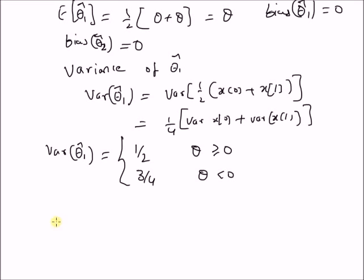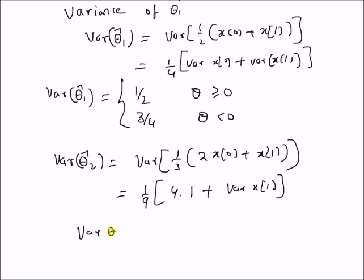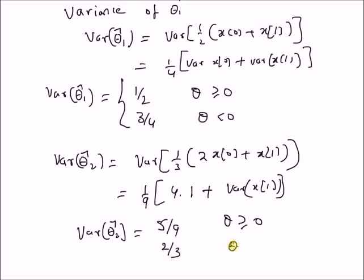Similarly, the variance of theta-hat₂ equals the variance of (1/3)(2x₀ + x₁), which also has two possible values based on the sign of theta. The first value is 5/9 for theta greater than or equal to 0, and the second value is 6/9, which equals 2/3, for theta less than 0.